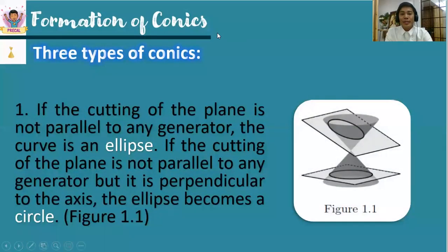Based from the discoveries of Apollonius of Perga, we form the three types of conics. First, if the cutting of the plane is not parallel to any generator, the curve is called an ellipse.